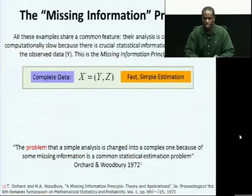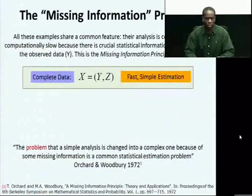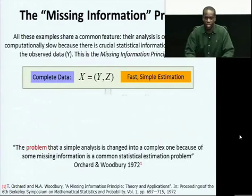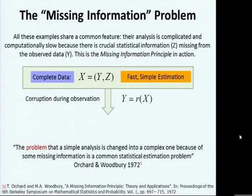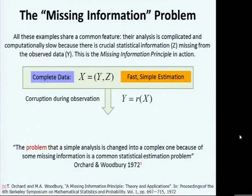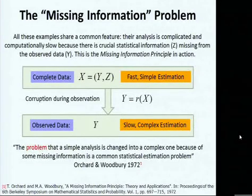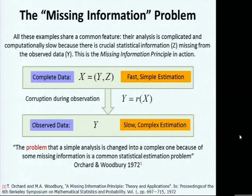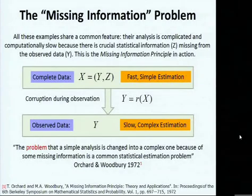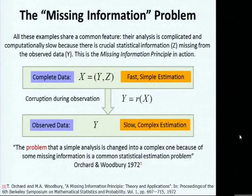All these models have one thing in common: they are working with missing information. You have a complete data space, and when you observe the data, you observe it through a corrupting procedure. This idea was formalized by Orchard and Woodbury in 1972 when they came up with the missing information principle — the idea that corruption during observation makes estimation slow and complicated.